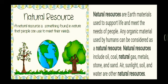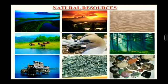Some things found in nature are directly used by us, whereas some are processed to produce various utility products. These things are called natural resources. A natural resource is something found in nature that people can use to meet their needs — hard-earned materials used to support life and meet the needs of people. Any organic material used by humans can be considered a natural resource. Examples include oil, coal, natural gas, metals, stone, sand, air, sunlight, soil, water, forests, wind, minerals, and animals.